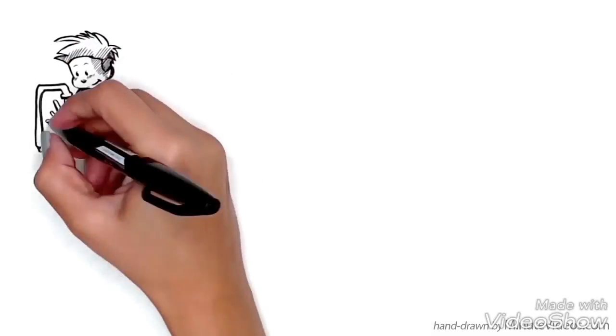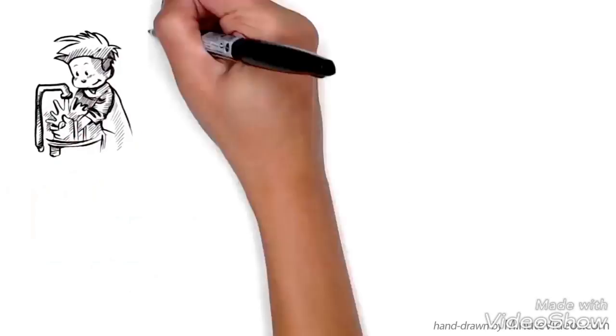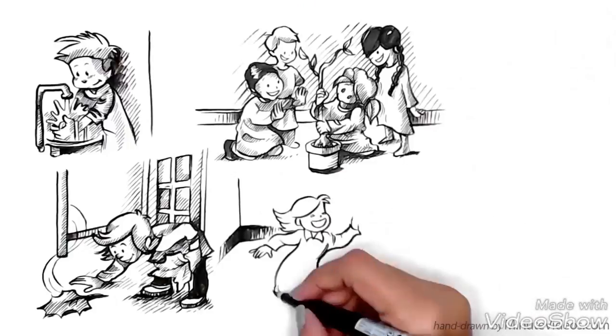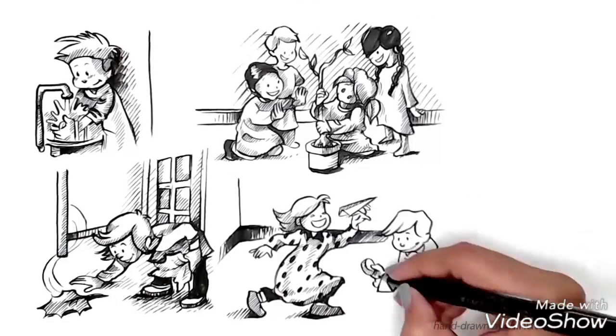Activities at this first school included personal care, such as dressing and undressing, care of the environment, like sweeping, dusting, and gardening. Otherwise, they were free to move around and play with the materials.